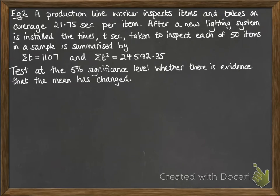Second example: A production line worker inspects items and takes an average of 21.75 seconds per item. After a new lighting system is installed, the time t seconds taken to inspect each of 50 items in a sample has those following summaries. We want to test at a 5% significance level whether there is evidence that the mean has changed.